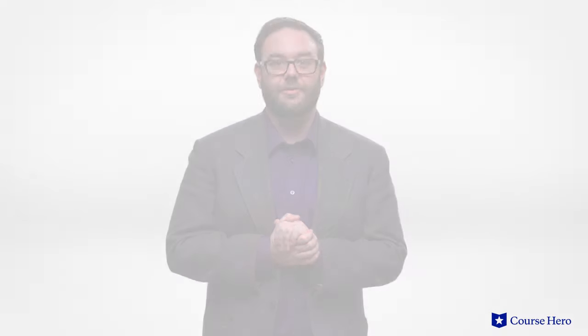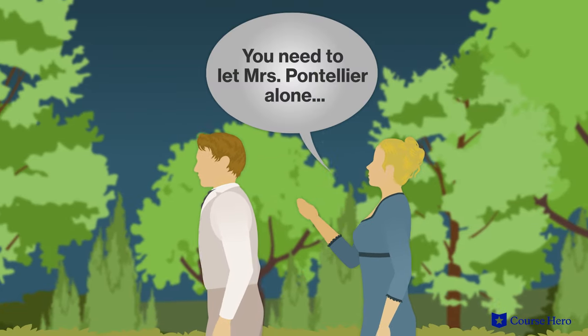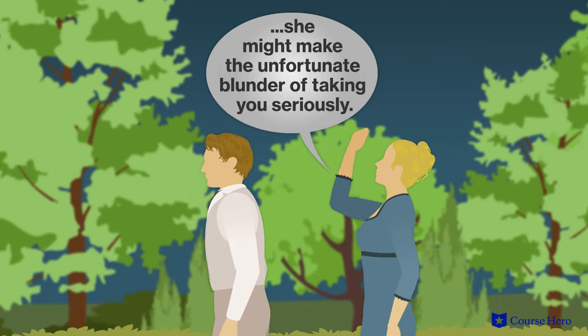In Mr. Pontellier's absence, Robert and Edna continue to spend time together. Madame Ratignolle, sensing Edna and Robert are quite close, warns Robert to leave Edna alone.